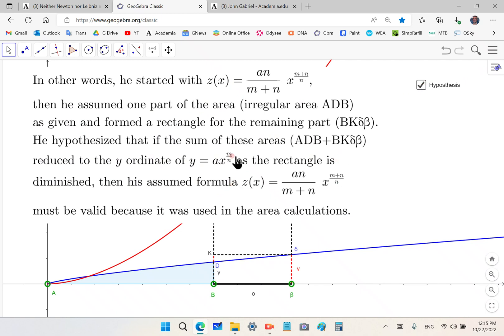He hypothesized that if the sum of these areas, this blue area and this rectangle, are reduced, then what you end up getting is that V becomes the Y ordinate something like this. So V becomes Y and then he could easily say well since Y is equal to V then this formula reduces to Y is equal to A over X to the M, which I'll explain to you in a minute. Then this formula was a correct guess. He guessed it, he never proved it.